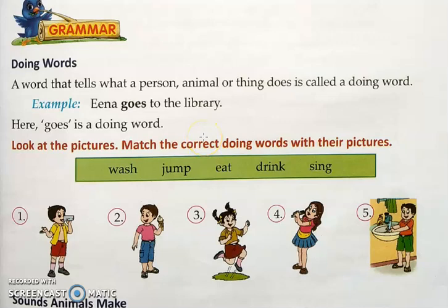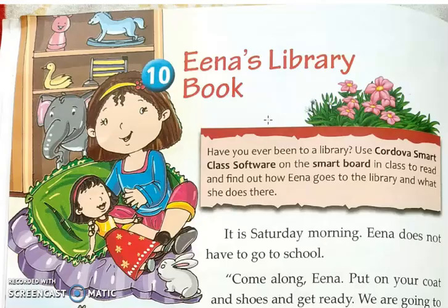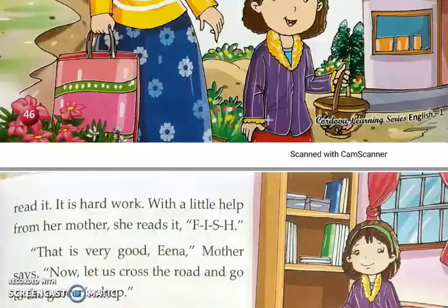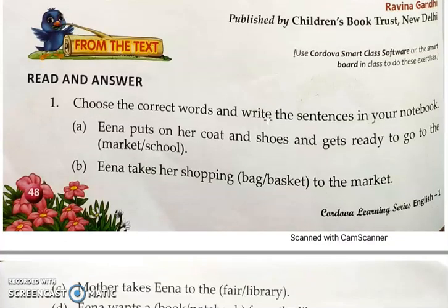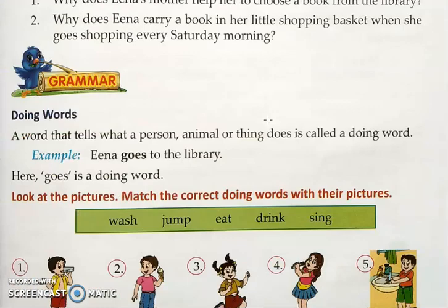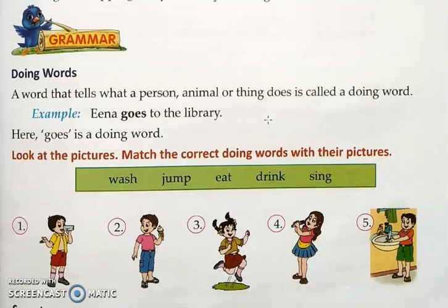Good morning students. Today we will be continuing with our English 2, that is the Fragrance textbook. In the last class I have already explained chapter number 10, Ena's Library Book. We have done the reading and you have completed the notes in the notebook. So today we will start with the grammar part.